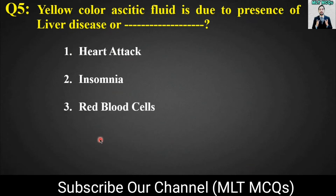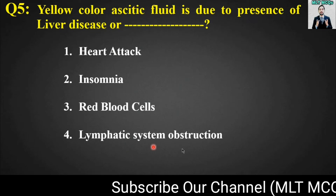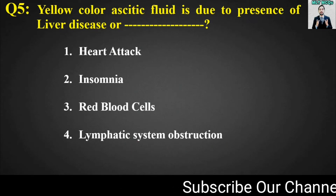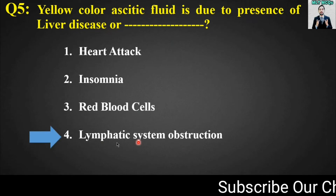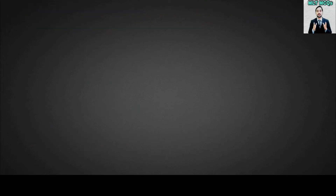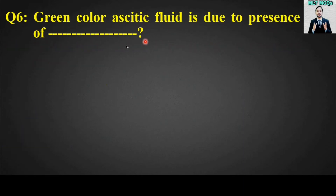red blood cells, or lymphatic system obstruction. The right answer for MCQ number five is option number four: yellow color ascitic fluid is due to presence of liver disease or lymphatic system obstruction. MCQ number six is: green color ascitic fluid is due to presence of blank.